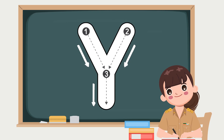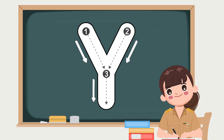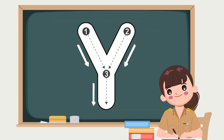Let's practice writing the big letter Y. Slant to the right, slant to the left, and line down. Fantastic!